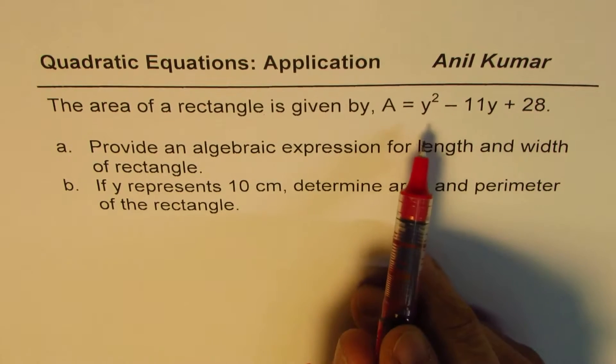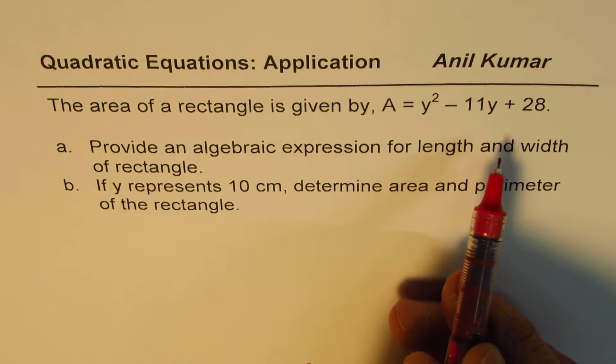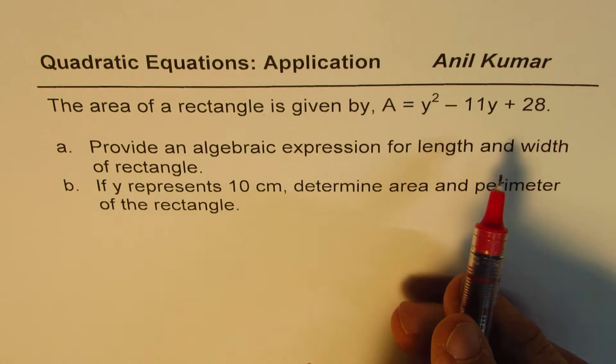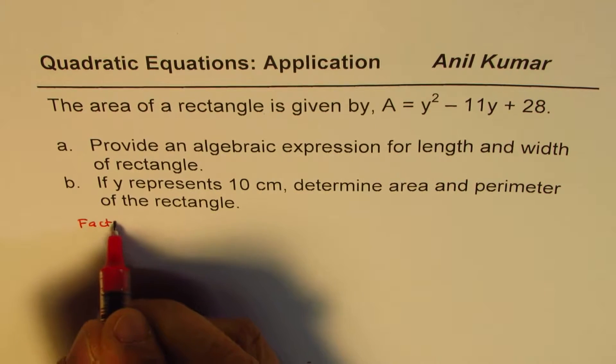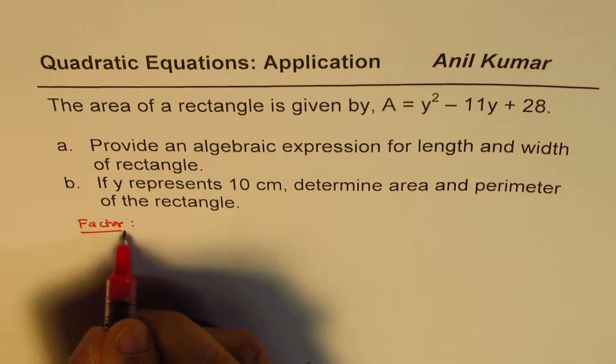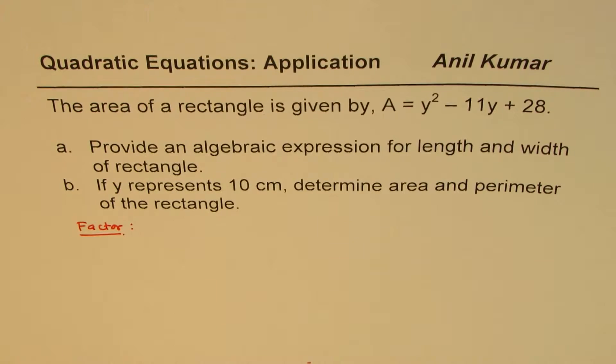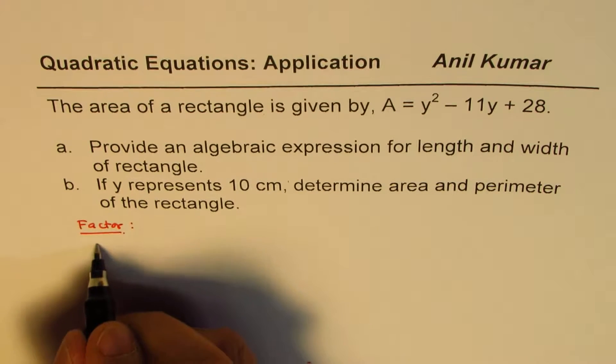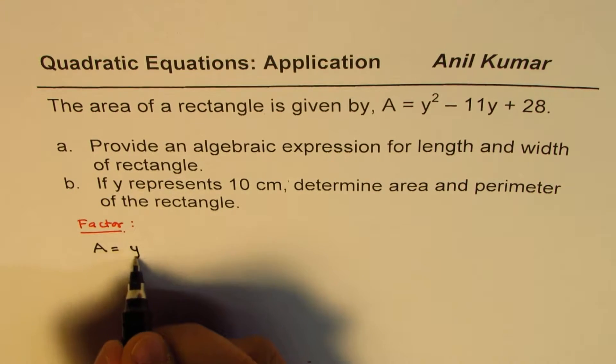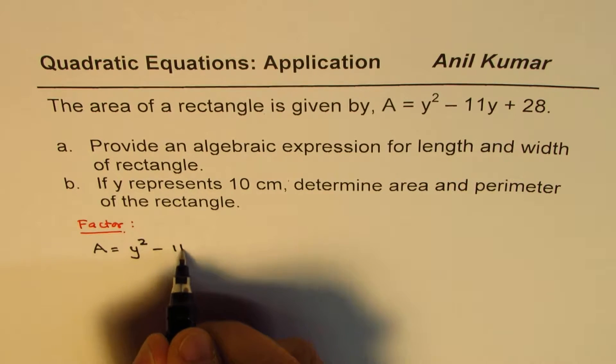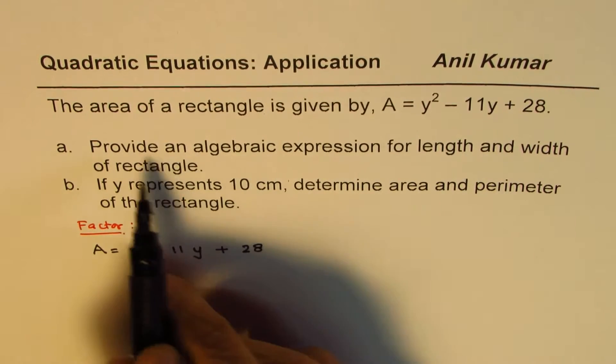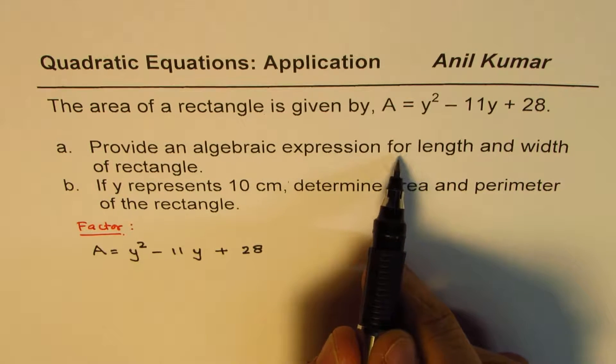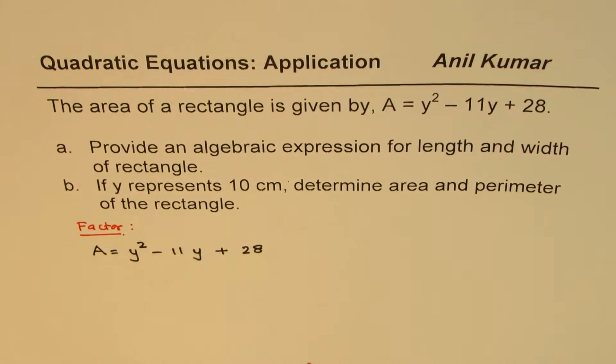In this particular example, we'll also practice factoring techniques. The idea is to factor and then solve. We are given the area as A equals to Y squared minus 11Y plus 28. We need to provide an algebraic expression for length and width of the rectangle.